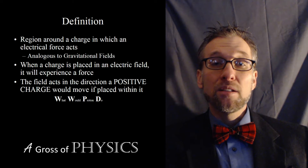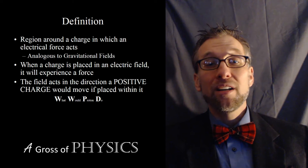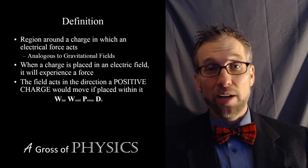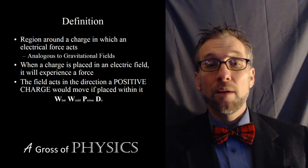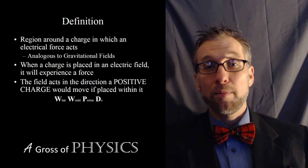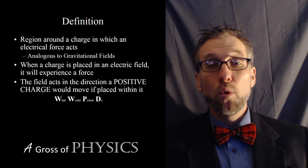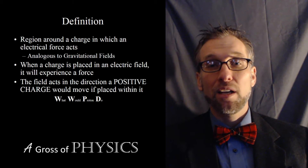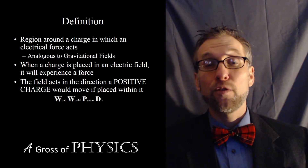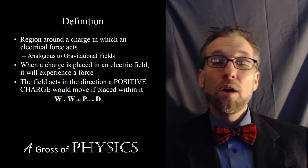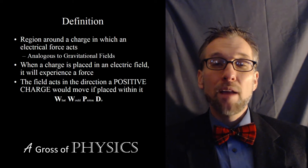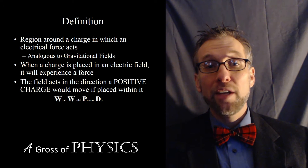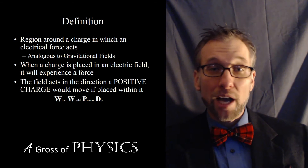That is defined for a proton, but an electron or a negatively charged particle would act in the opposite direction. For example, back to the electric field for the Van de Graaff generator — if it's a positive field, then an electron would move towards the Van de Graaff. This is similar to what would happen if I placed an object in the Earth's gravitational field and let it go — it would fall towards the surface of the Earth. So electric fields can be repulsive or attractive depending upon what charge is placed in them. However, we always define the field as what would happen if a proton were placed within it.